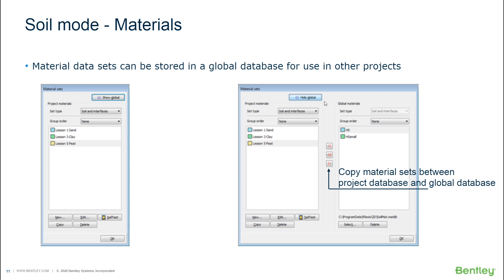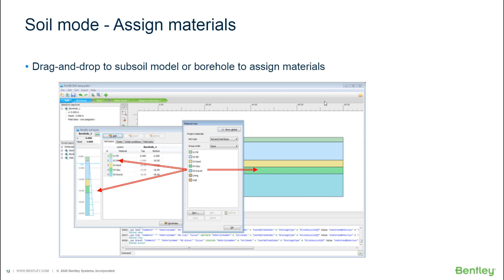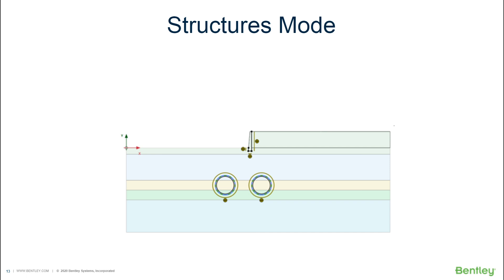Once you have created or copied materials from the global database, assigning them is very easy. You can click directly on the material in the material database, hold the left mouse button, and drag it into your model or into the soil layers definition window — either in the borehole interpretation window or directly onto the model. There is also another way through the explorers, but the simplest approach is to drag the material directly onto your model. It will take the color of the assigned material model, so if it is green, it will become green. This completes the definition of everything related to the soil materials.